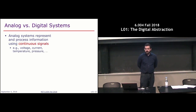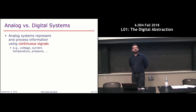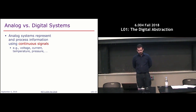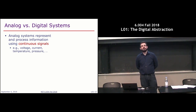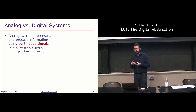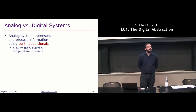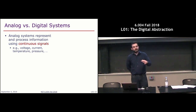Very broadly, there are two classes of systems. On one hand you have analog systems, which represent and process information using continuous signals. These continuous signals can be encoded with any physical quantity — voltages, currents, temperature, pressure, anything that fluctuates over time.